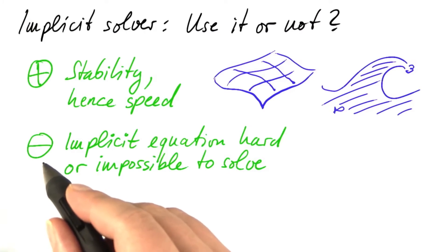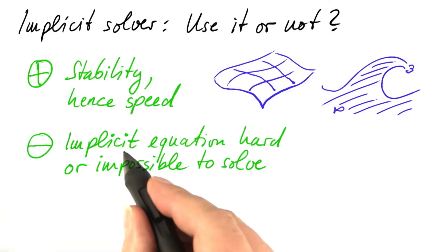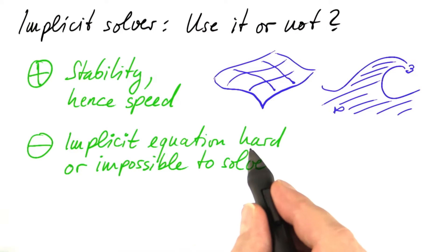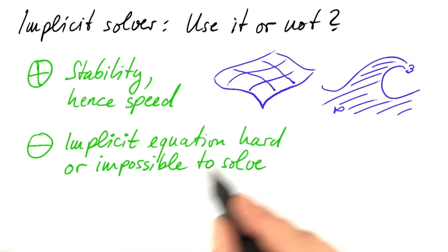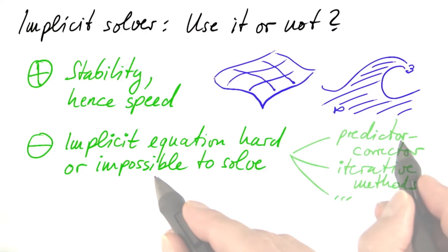The big disadvantage of implicit solvers is that they are, well, implicit. We get equations that we have to solve, which is hard to do or can be even impossible to do with standard functions.